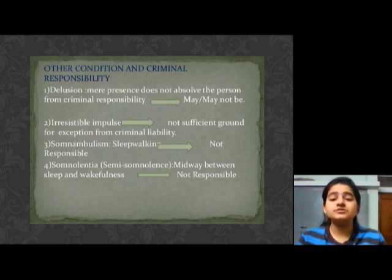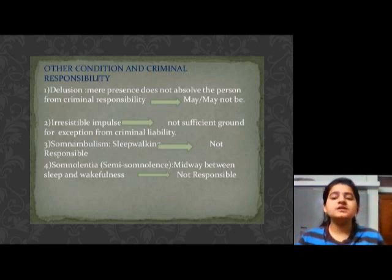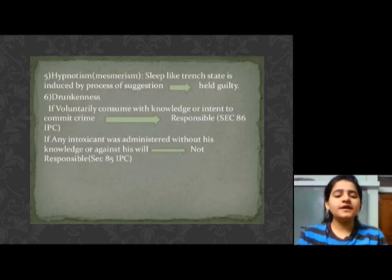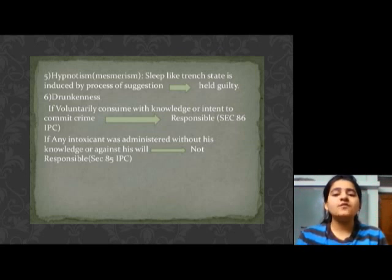Third is somnambulism, which is also called sleepwalking. A person committing a crime under sleepwalking is not held guilty for the crime. Fourth is somnolentia. Somnolentia is a semi-somnolence — a midway between sleep and wakefulness. A person under somnolentia is also not responsible for his crime. Fifth is hypnotism, also called mesmerism. Hypnotism is a sleep-like trance state induced by a process of suggestion. If any person commits a crime under hypnotism, he will be held guilty for his crime.